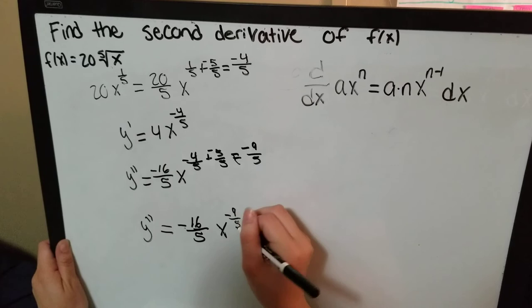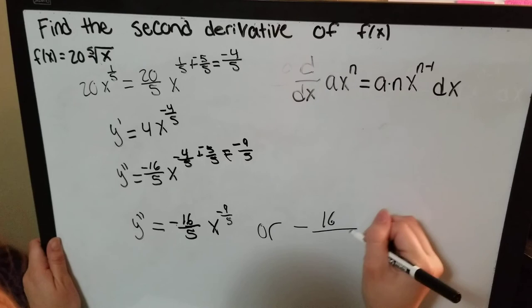Or, you can write it as negative 16 over 5 to the fifth root of x to the ninth.